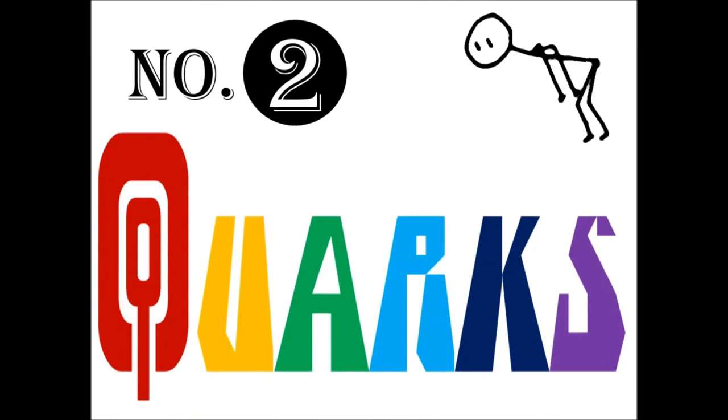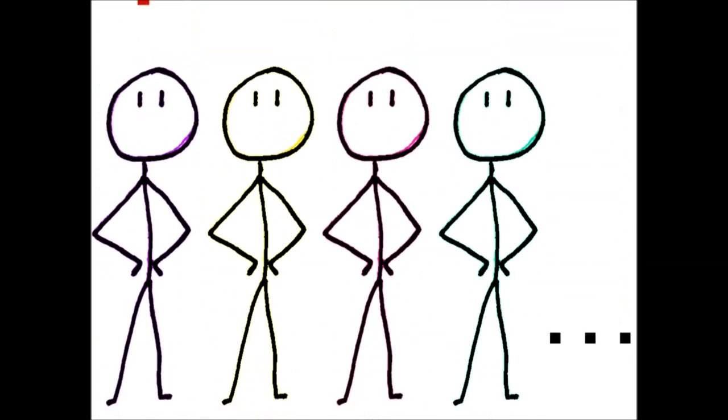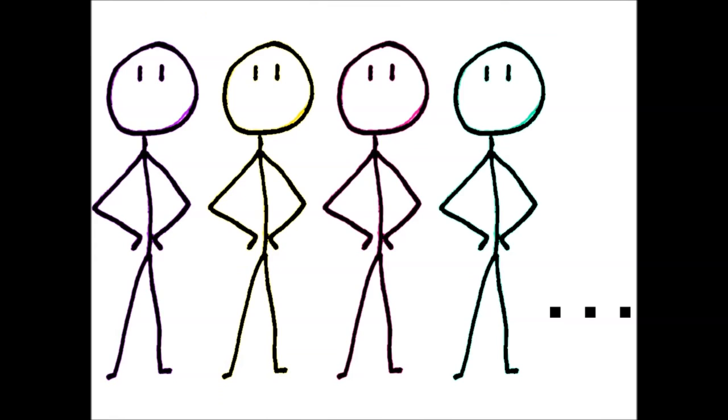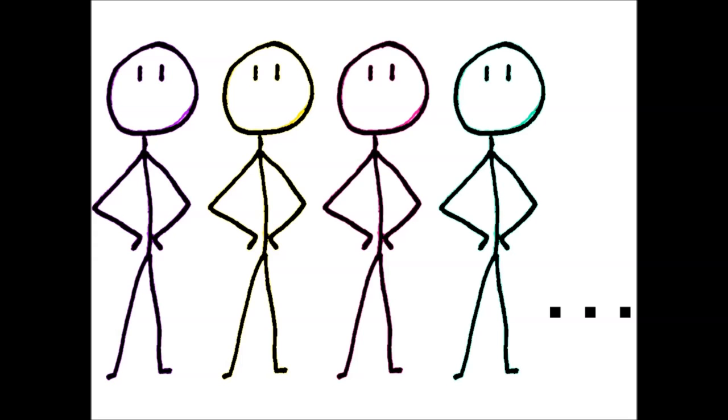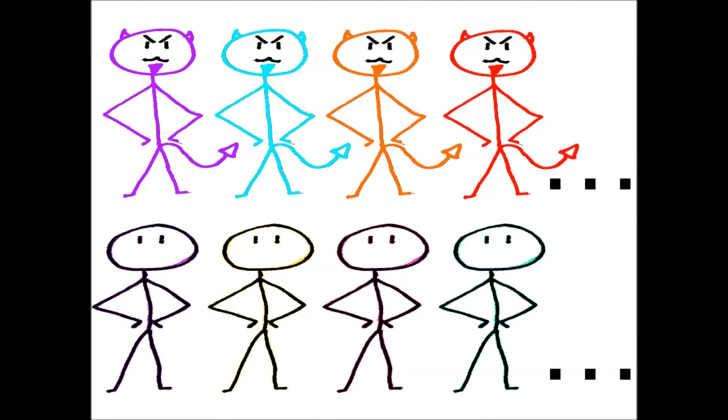Number 2. Quarks. Quarks are the building blocks of the nuclei of atoms. But many more types are available than you can find in your average atom, and you need a particle accelerator to create them. Each has an antimatter brother.